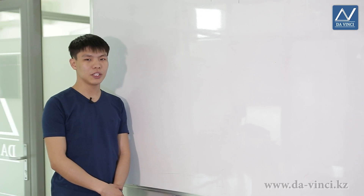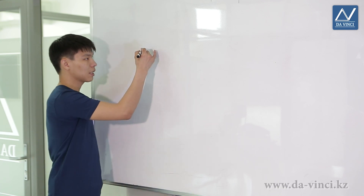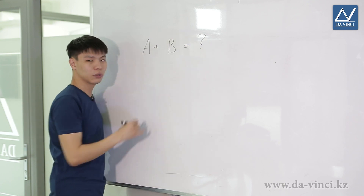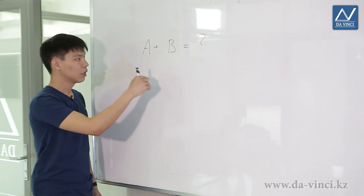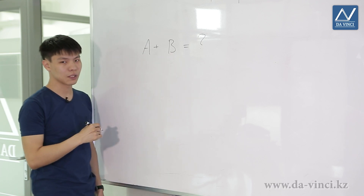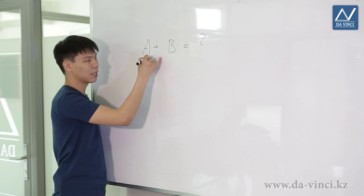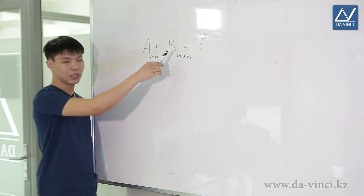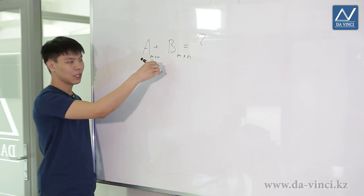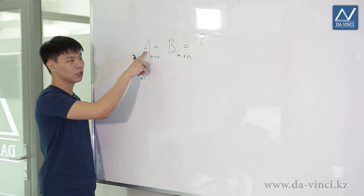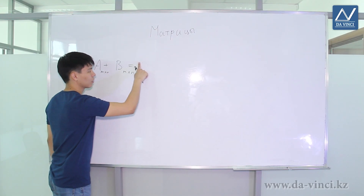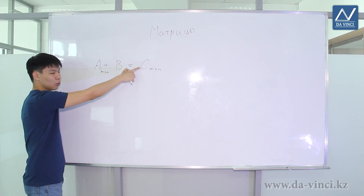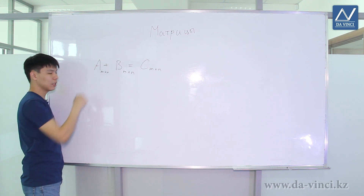We can perform various arithmetic operations with matrices. Let's start with addition. As a result of adding two matrices, we naturally get a matrix. But we can only add matrices that have the same sizes — if matrix A has size M by N, then matrix B should also have size M by N; otherwise we cannot add them. Matrices are added element by element, and as a result we get matrix C of the same size, whose elements are obtained by adding corresponding elements of A and B.